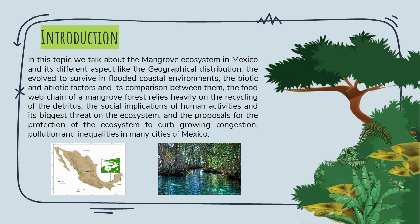Introduction. In this topic, we talk about the communities and ecosystems in Mexico, including the geographical distribution of mangroves along the coastal areas. We also cover the biotic and abiotic factors, the food chain of the mangrove forest, the social implications of human activities, and proposals for the protection of the ecosystem to curb growing pollution in many cities in Mexico.